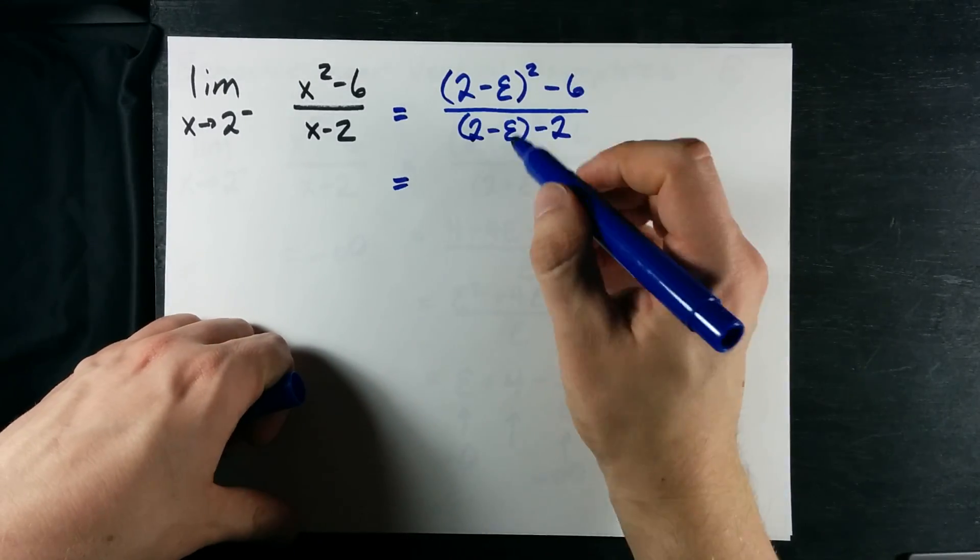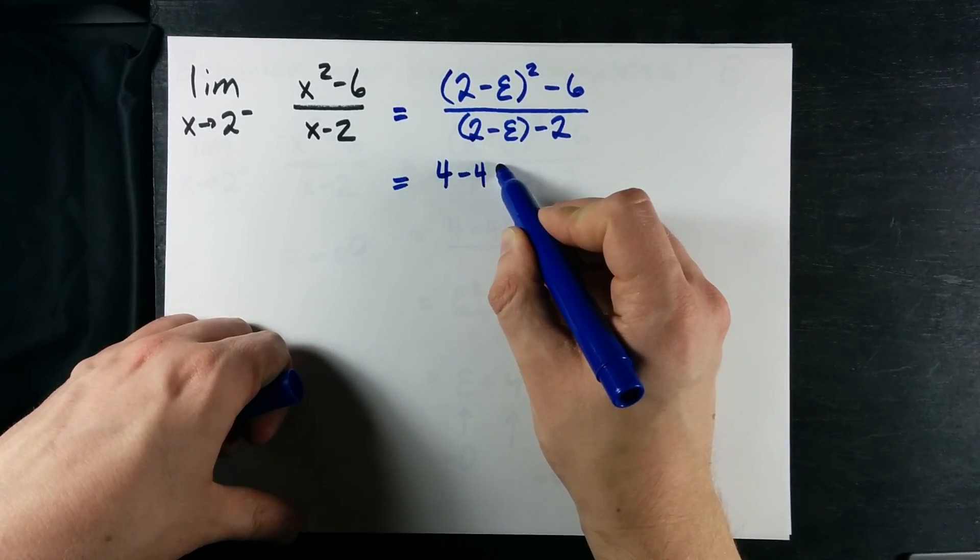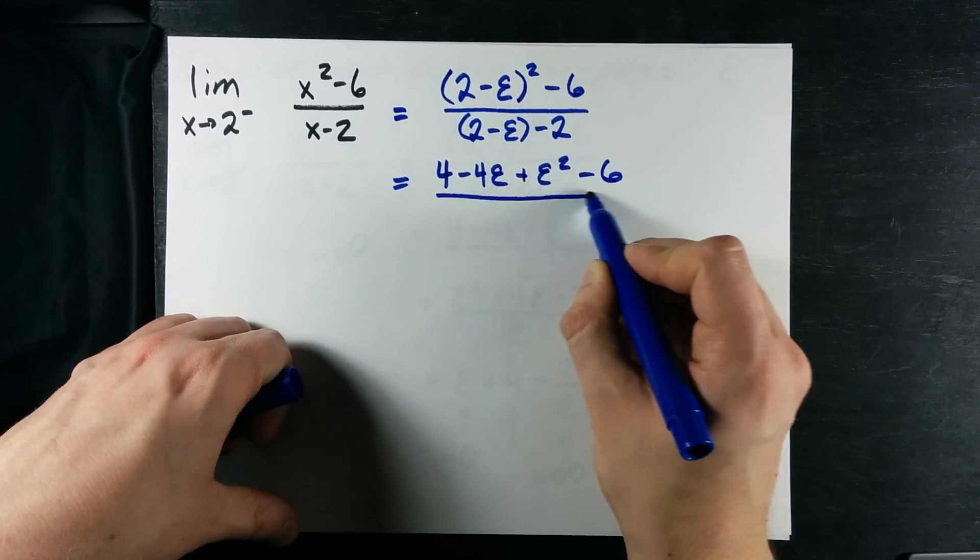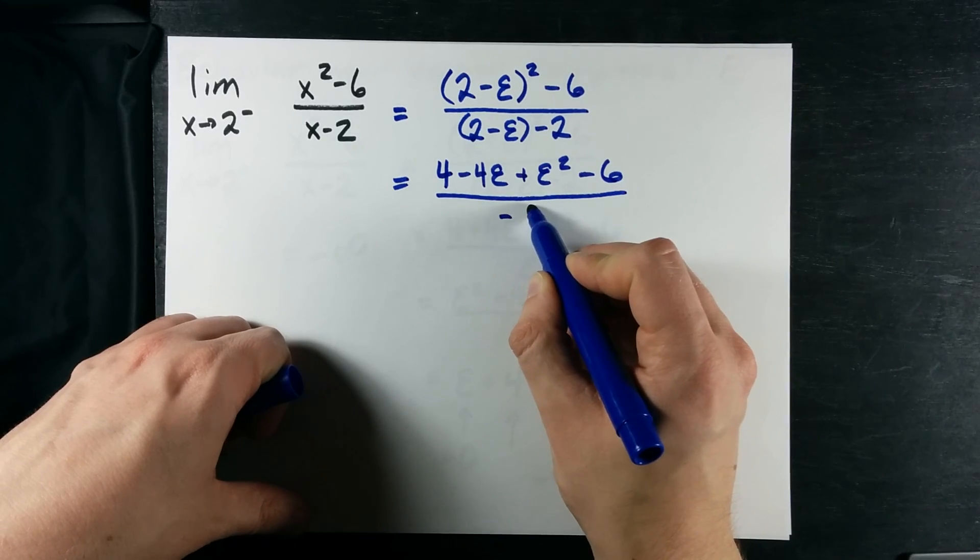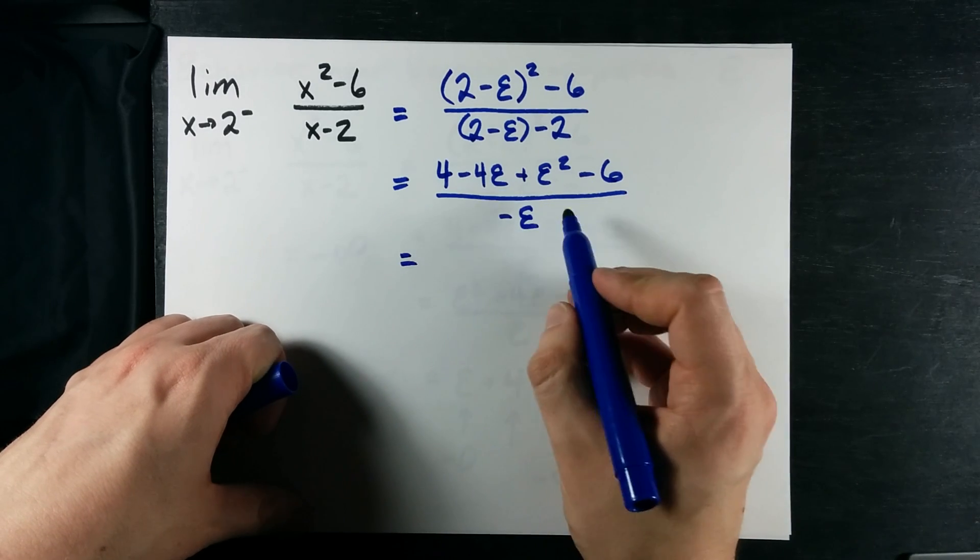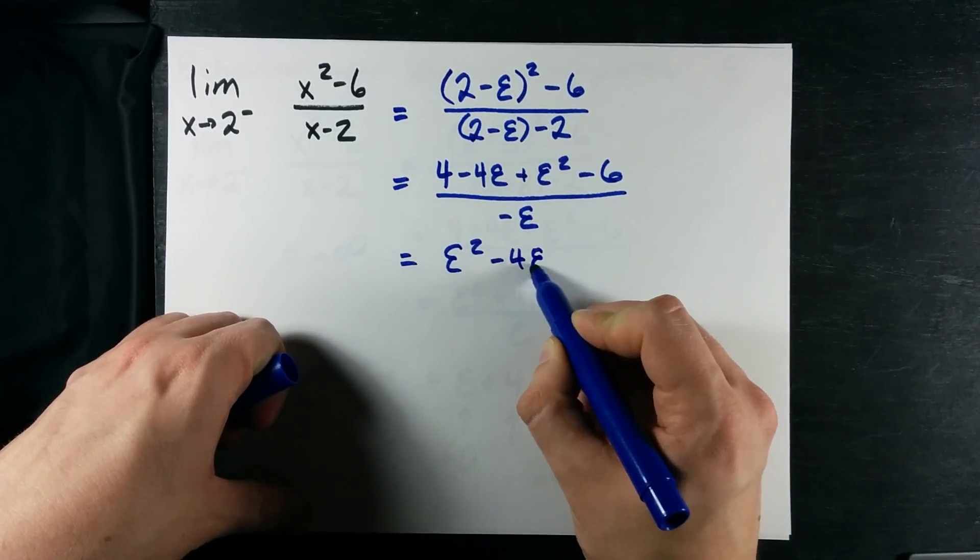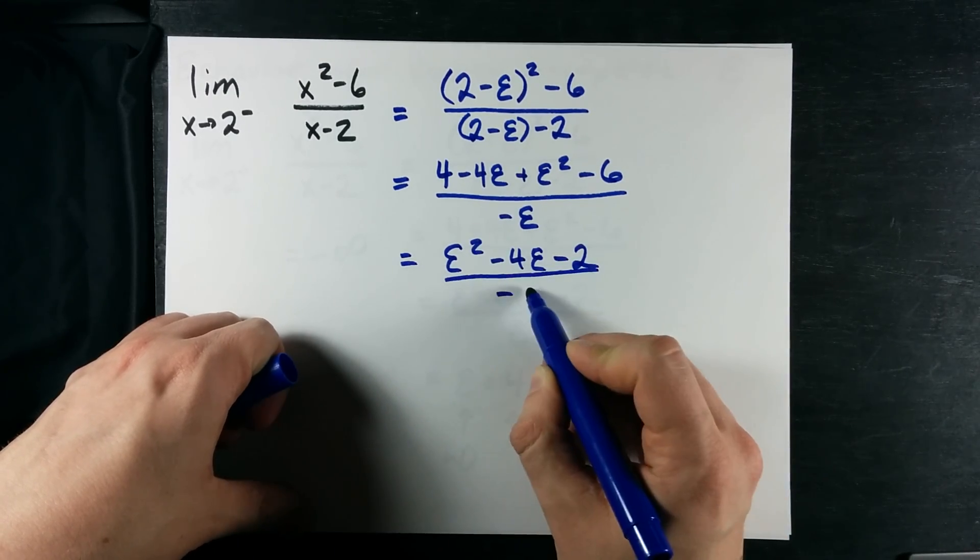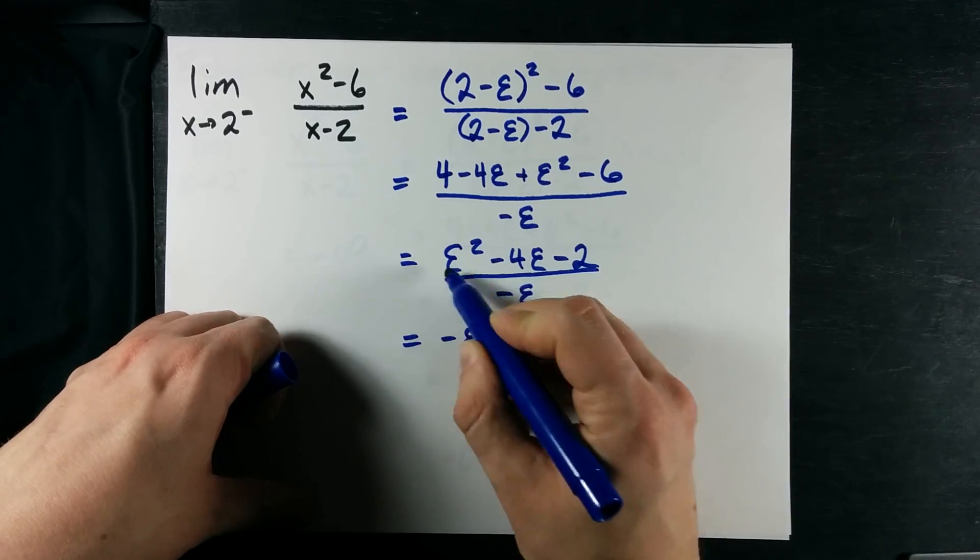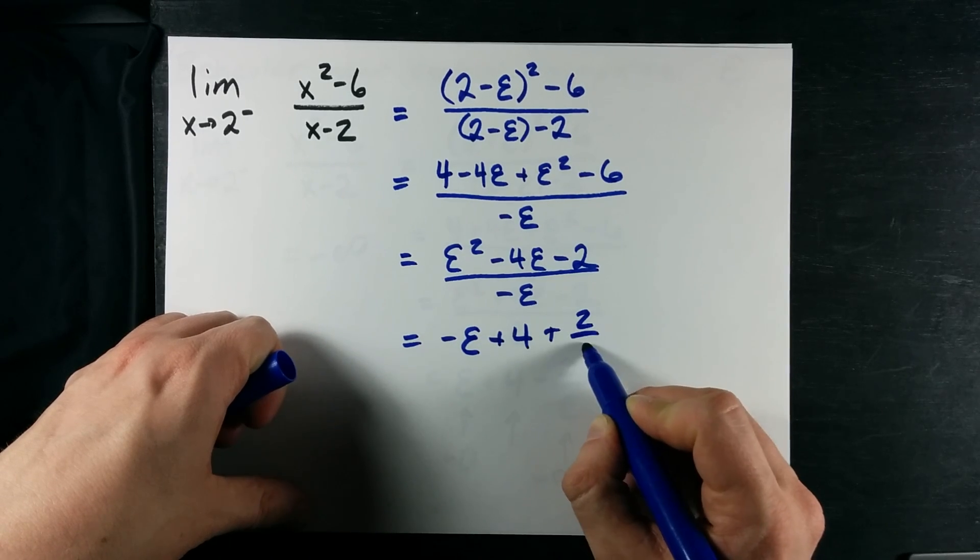2 minus epsilon goes in for that x as well. I'm just going to multiply this through for you. I get 4 minus 4 epsilon plus epsilon squared all over negative epsilon. See, the negative came out where it didn't come out in the last question. Epsilon squared minus 4 epsilon minus 2 all over negative epsilon. And when I do the division...